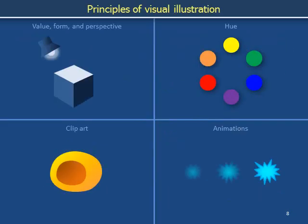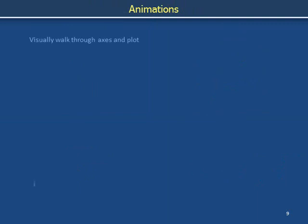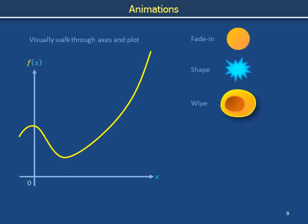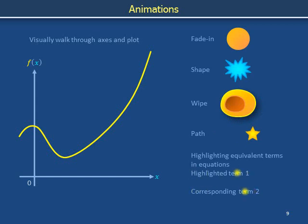The next slide contains examples of techniques to guide viewer attention using animations. Magicians misdirecting your attention and flight attendants pointing out illustrations on safety cards take advantage of the fact that human eyes notice flashes and track smooth motion. When displaying plotted curves, individually trace out the axes and the curve. When introducing an object, repeat the animation — this works for fading in, for explosions, and for wipes. When describing movement, animate the movement using a path. And when comparing two terms in an equation, highlight the terms by swiping back and forth with spotlights.